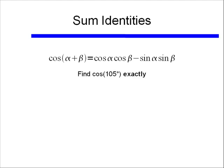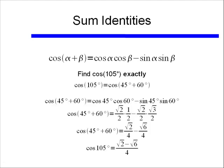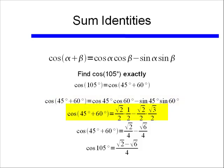Let's look at the same problem, but now we want to find cosine of 105 degrees exactly. Cosine of 105 degrees is going to be equal to cosine of 45 degrees plus 60 degrees. Using the formula, cosine of 45 degrees plus 60 degrees equals cosine of 45 degrees times cosine of 60 degrees, minus sine of 45 degrees times sine of 60 degrees. Plugging in our known values, we end up with the final answer: cosine of 105 degrees equals square root of 2 minus square root of 6, all over 4.